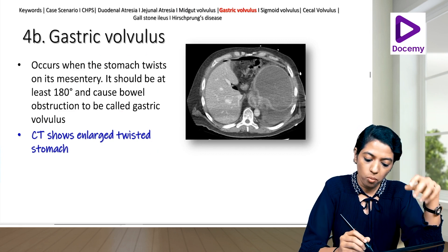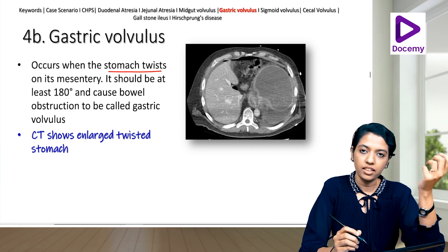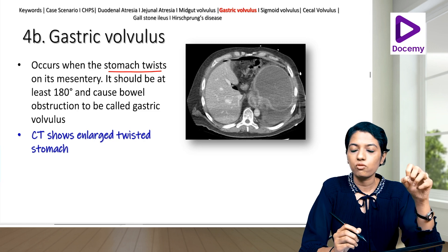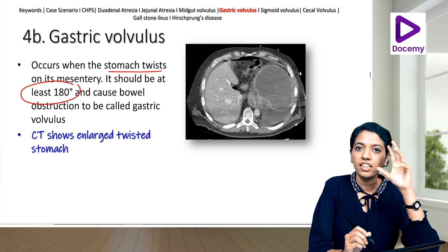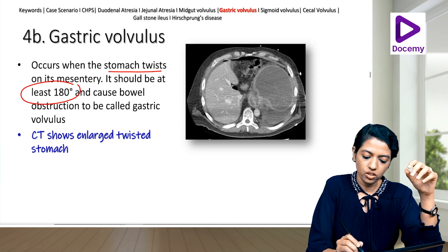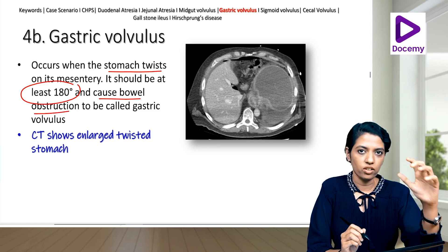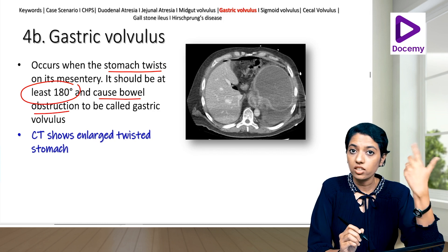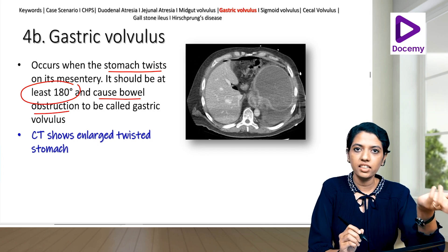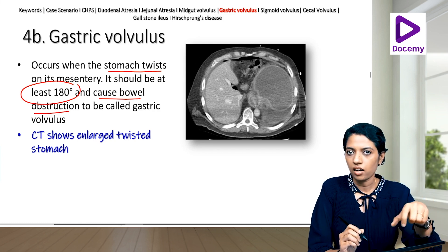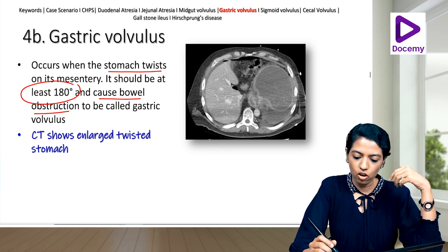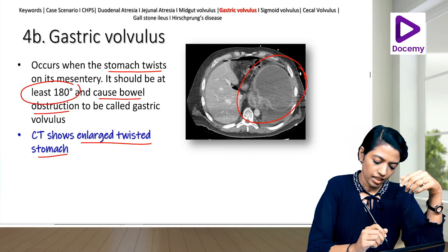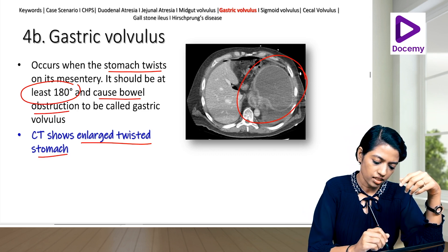Gastric volvulus occurs when the stomach twists on its mesentery. To qualify as gastric volvulus, the twist must be at least 180 degrees and cause outlet obstruction. CT shows an enlarged, twisted stomach.